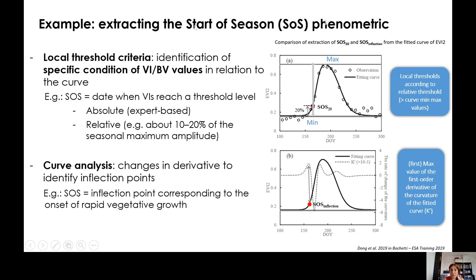Here is an example for the start of the season. You can define it using an absolute threshold — when NDVI or EVI reaches a certain value — or a relative threshold, when NDVI has reached 10–20% of the amplitude. Or you can use curve analysis and look at the derivative to find inflection points. There are different ways of defining phenometrics. The idea is simply to link phenological stages with the spectro-temporal signal in your biophysical variables.